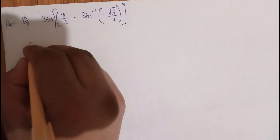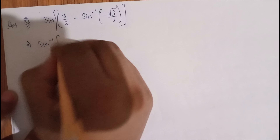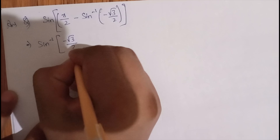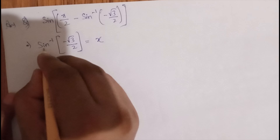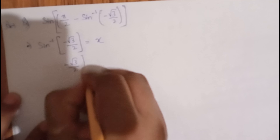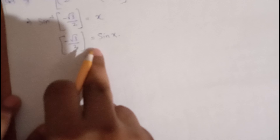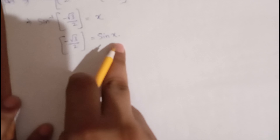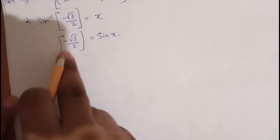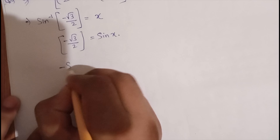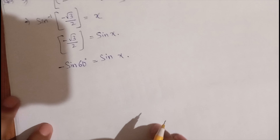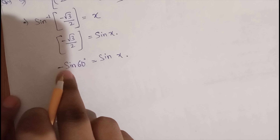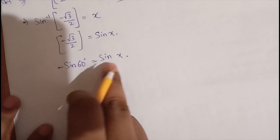The innermost part is sine inverse of minus root 3 by 2. I will equate it with x, so sine x equals minus root 3 by 2. Now, minus root 3 by 2 is the same as minus sine 60 degrees, so we have minus sine 60 equals sine x.